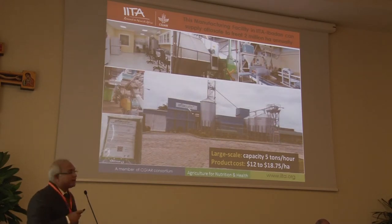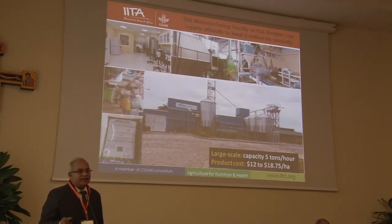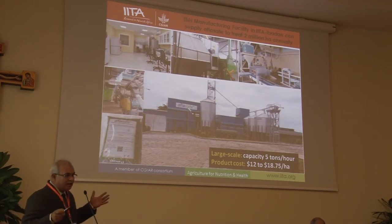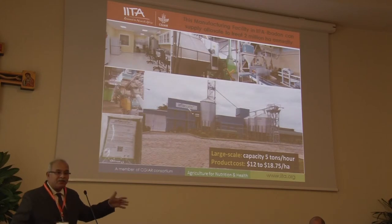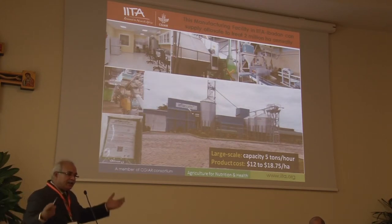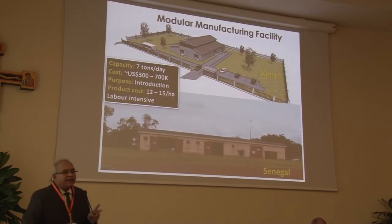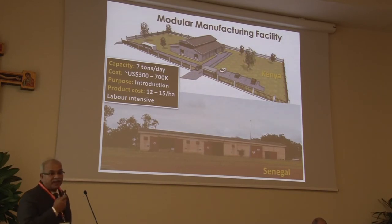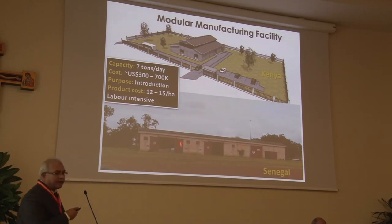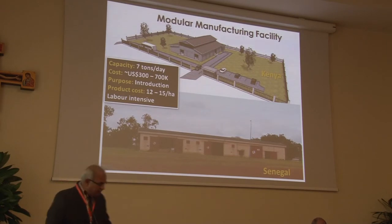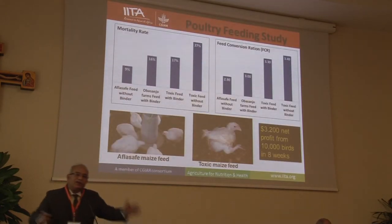This plant can produce about 5 tons of AFSAFE per hour, with capacity to treat about 2 million hectares every year. It was also set up as a demonstration plant where people can come and see how it's done and take the technology back. We are currently developing two other smaller plants — one in Kenya at Kalro Katumani, being built from scratch, and one in Senegal where a private company has set aside a building to manufacture the product.